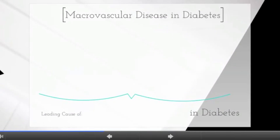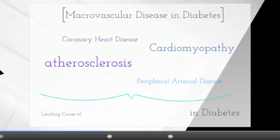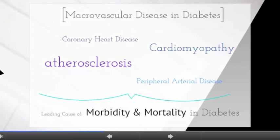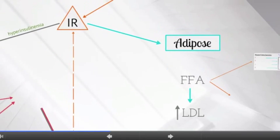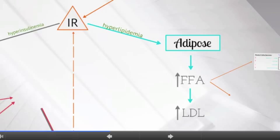Insulin resistance also plays a pivotal role in the development of macrovascular diseases, the leading cause of morbidity and mortality in diabetes. The increase of free fatty acids from adipose tissue promotes enhanced triglycerides and very low-density lipoprotein cholesterol synthesis. As a result, HDL cholesterol levels decrease and LDL cholesterol concentration increases — a metabolic disorder called hyperlipidemia.